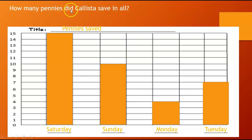So the first question is how many pennies did Calista save in all? So how many pennies did she save on Saturday? First we need to think, are we going to add or subtract? It says how many pennies in all? So that means we're going to have to add. And we're going to add them all up: Saturday, Sunday, Monday, and Tuesday. In all. Just think about those words.